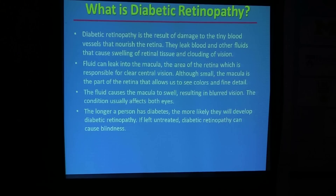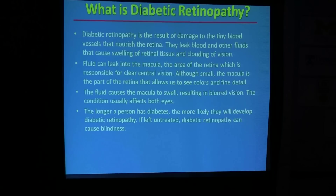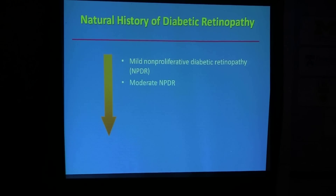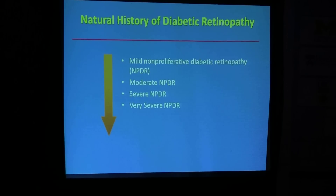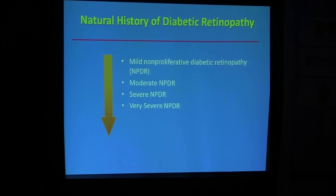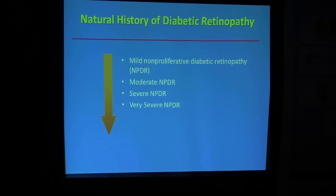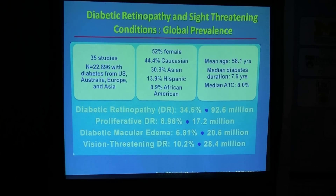Diabetic retinopathy involves fluid leakage and hemorrhages in the eye due to hyperglycemia, along with other factors. Looking at the natural history of diabetic retinopathy, if we can intervene at the early stage — mild non-proliferative diabetic retinopathy — that is where nutrition will work. Once patients progress to moderate, severe, and very severe stages, we are out of control. That is why we always focus on nutritional management during the early period of the disease.